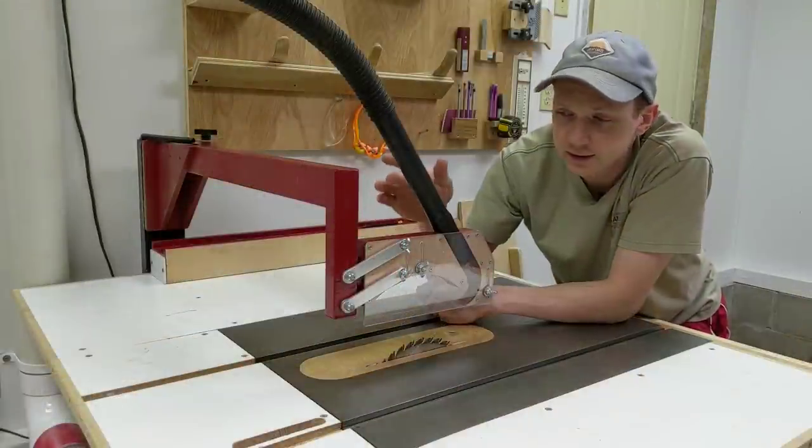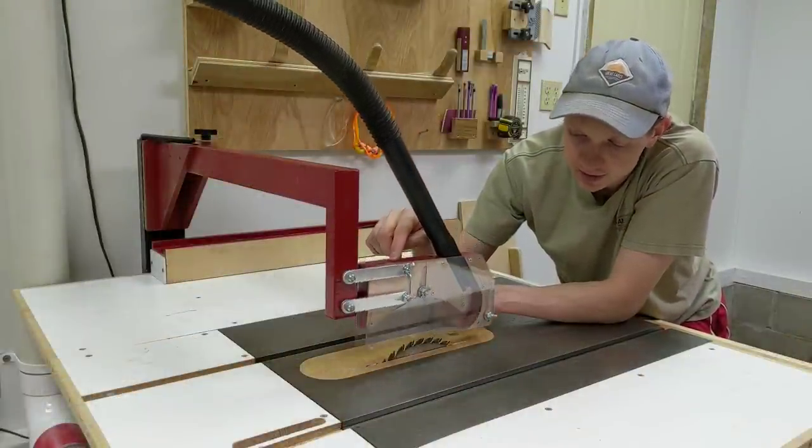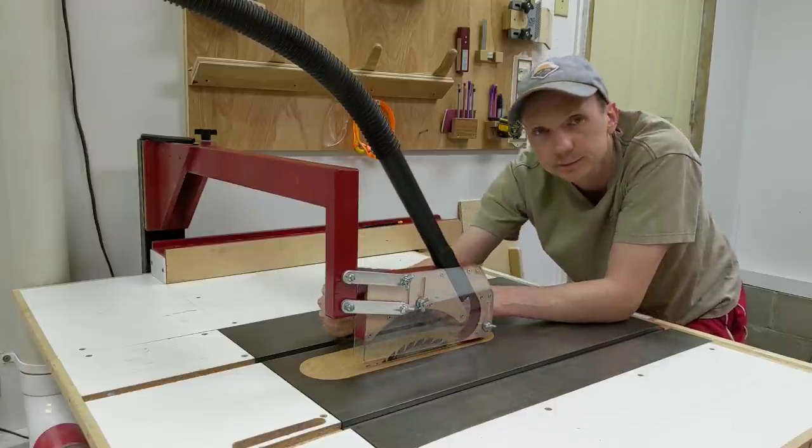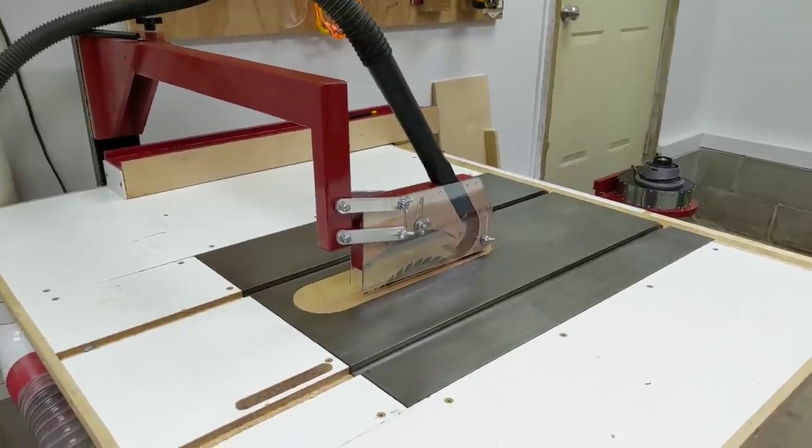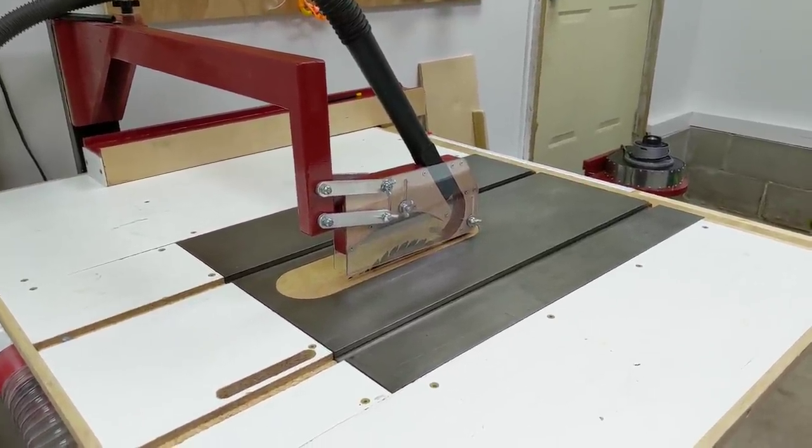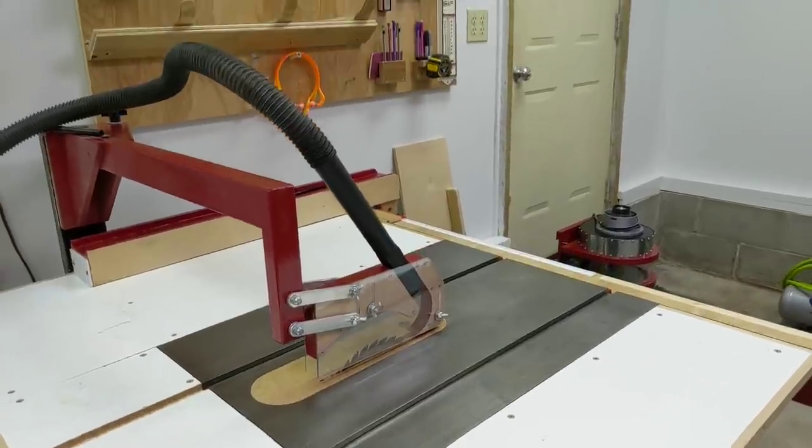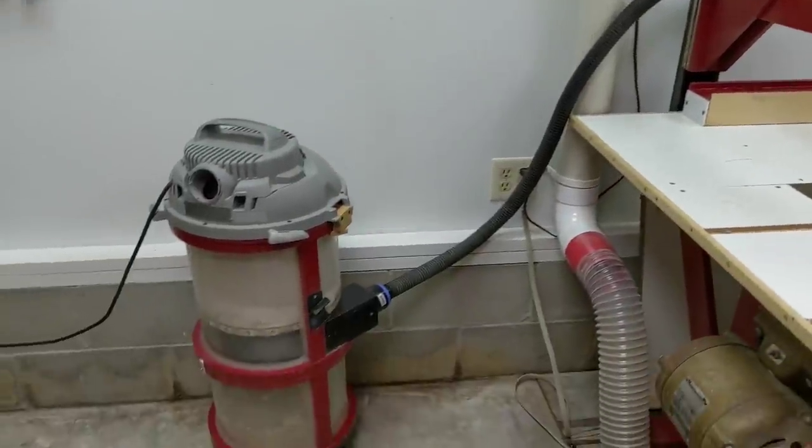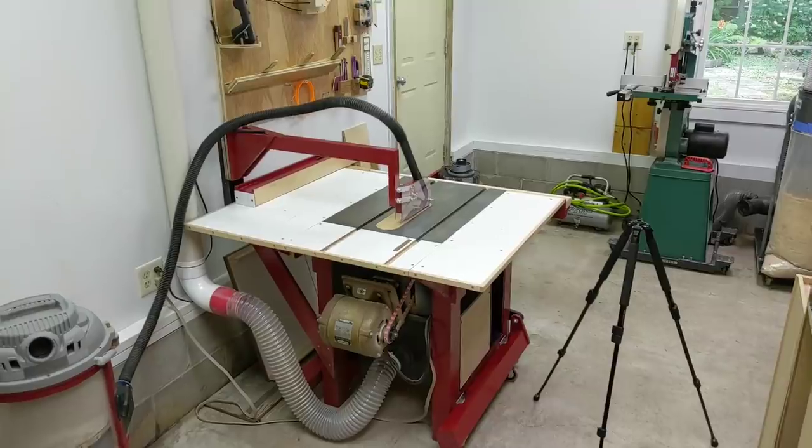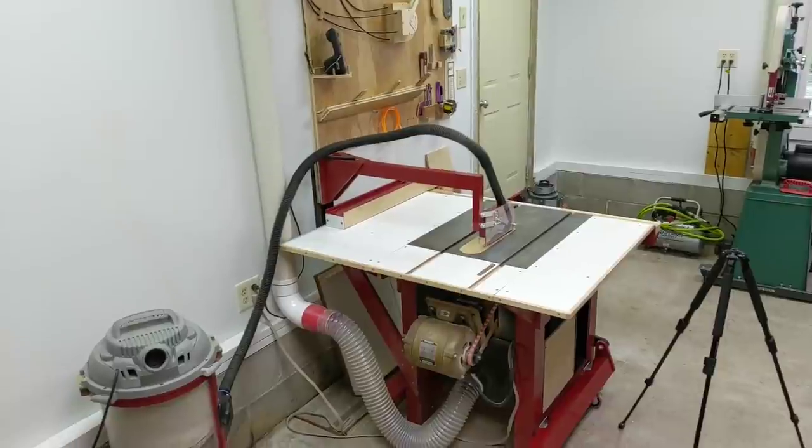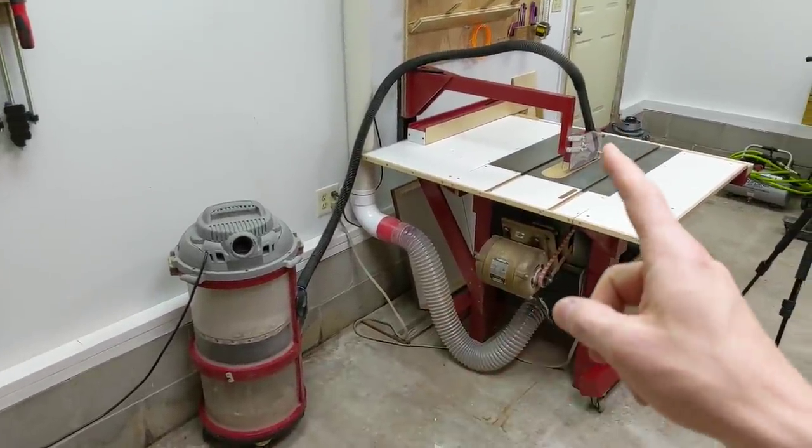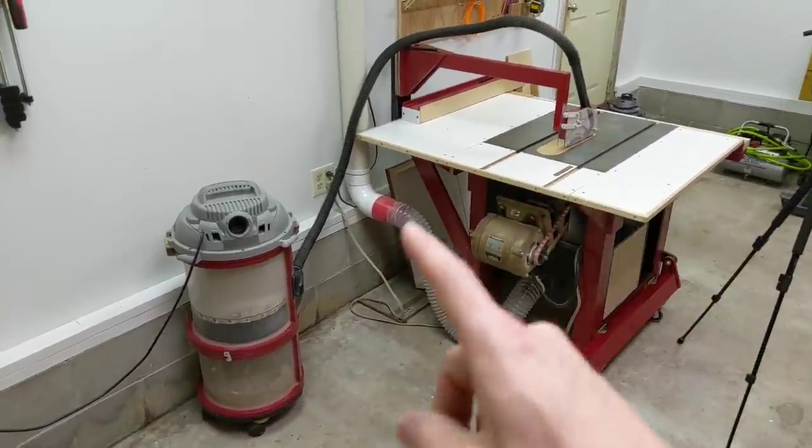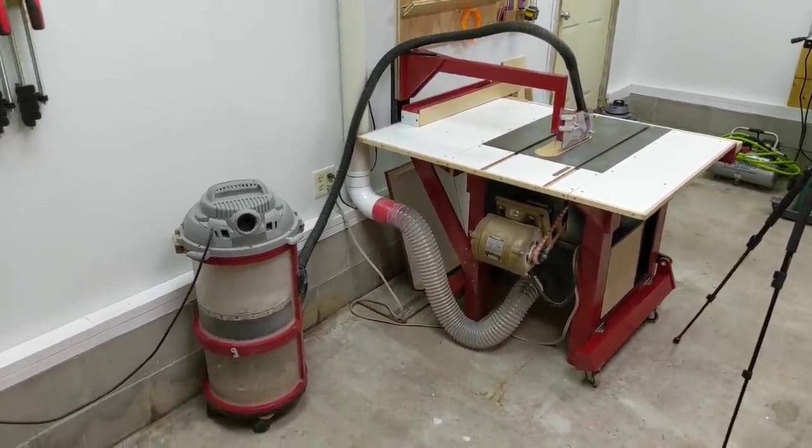This overarm dust collector does a really good job at collecting the rest of the dust that's thrown above the blade and into the air. With the design of this overarm dust collector it's got a very small dust chamber hooked up to a pretty small dust hose, and that paired with a shop vac makes for really good dust collection. The only downside is I've always got to have my shop vac hooked up to the overarm dust collector, and that means it's always out on the floor, the hose is out and the cord is out, and they're always just getting in the way.